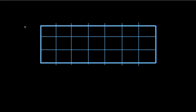We have the same grid of three by seven — this is our starting position and this is our end position. This is the classic dynamic programming problem. What we are going to do is at every grid cell write the number of possible unique paths one can take to reach there.